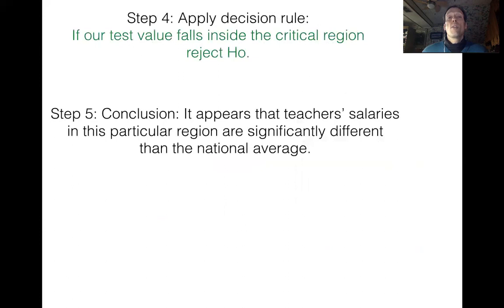One really important thing that we have to mention when we do a two-tail test, a mistake that a lot of students make is when they do their conclusion, they think back to what their sample average was. And if it's higher than the population average, they're tempted to say in their conclusion that it appears the teacher salaries in that region are higher than the national average. But don't do that. That's a really big mistake. Because remember, we set up for a two-tail test. Statistically, we're not at all set up for a right-tail test. We use the two-tail test procedure. So our conclusion is specifically going to say that in this particular region, the salaries are different than the national average.